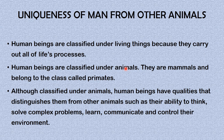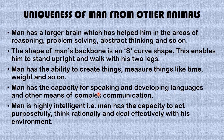Now we'll be looking at the uniqueness of man from other animals. Human beings are classified under living things because they carry out all of life's processes. They are also classified under animals, but have qualities that distinguish them from other animals, such as the ability to think, solve complex problems, learn, communicate, and control their environment.